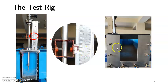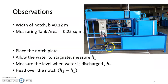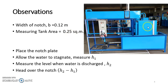This is the side view of the channel and the rectangular notch. The width of the rectangular notch in our laboratory is 12 centimeters. For the observation part, the width of the notch is 0.12 meters as discussed, and the measuring tank area, which remains the same as for the V-notch, is the cross-sectional area of the measuring tank: 0.25 square meters.